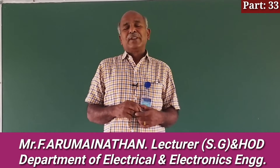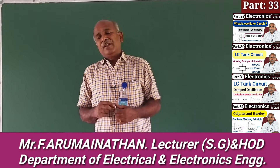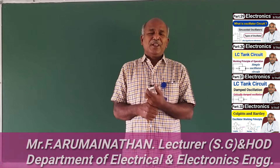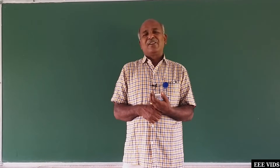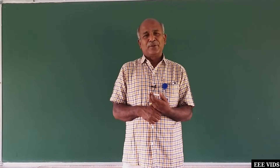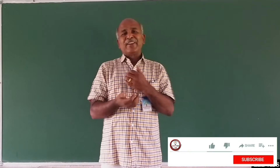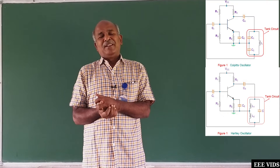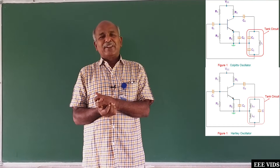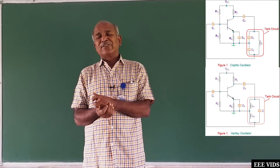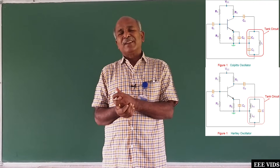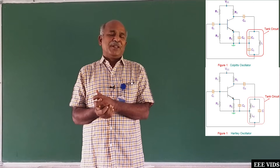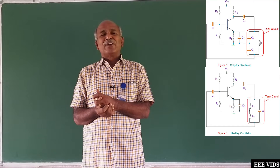So last class, we saw LC Resonance Oscillators — Colpitts oscillator and Hartley oscillator. This is a tank circuit-based oscillator. There is a tank circuit, there is an amplifier, and the output goes to feedback circuits. This is the oscillator form.